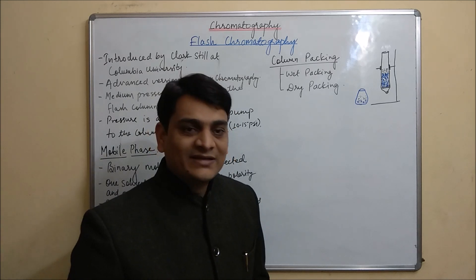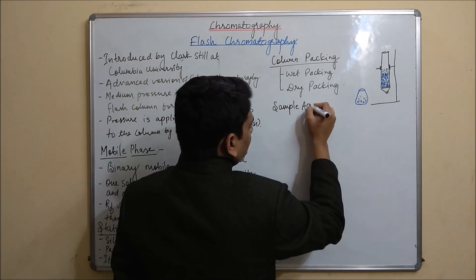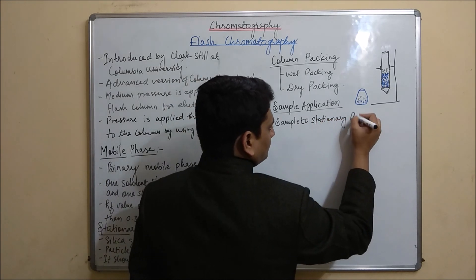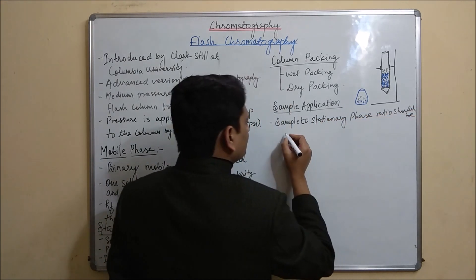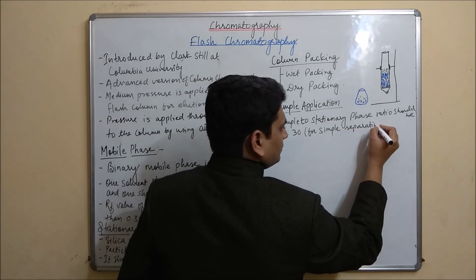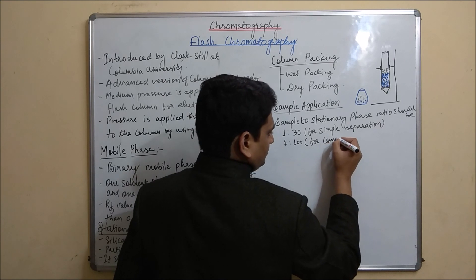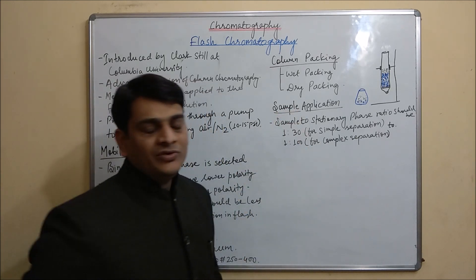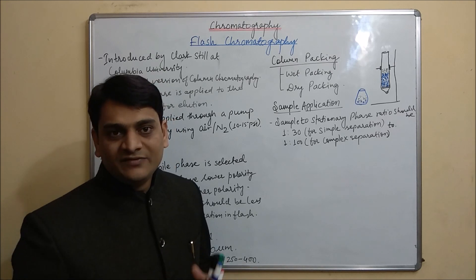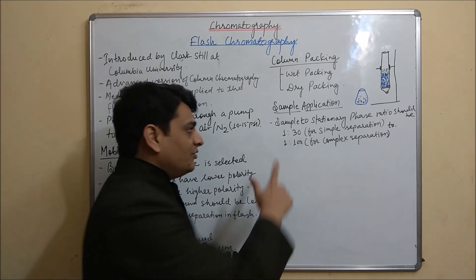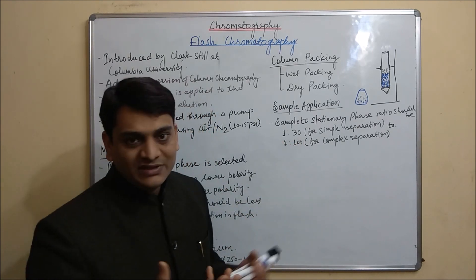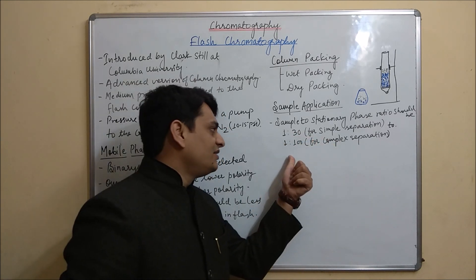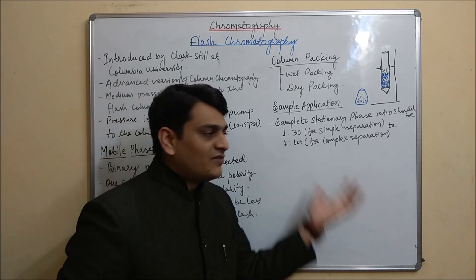Coming to the sample application of the flash column. Before sample application, we need to know about the sample-to-stationary phase ratio. This ratio should be 1:30 to 1:100. If we are using 1:30, then simple separation takes place. If we are using 1:100, this ratio is used for complex separation.